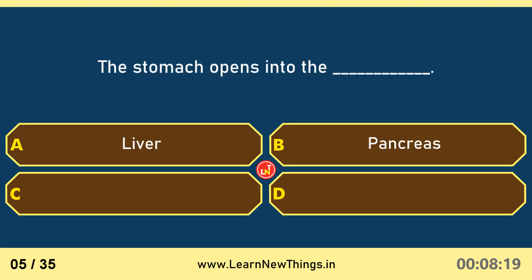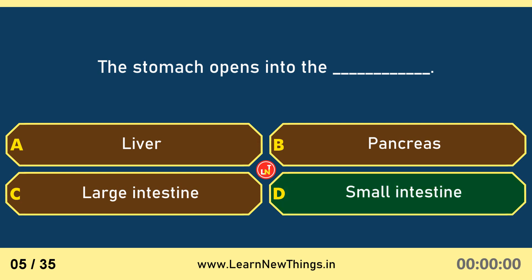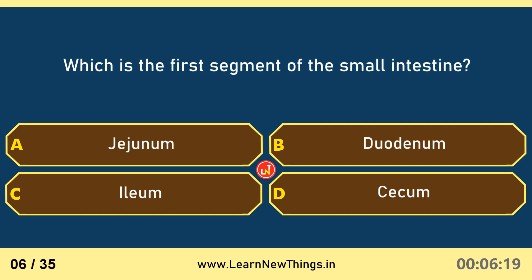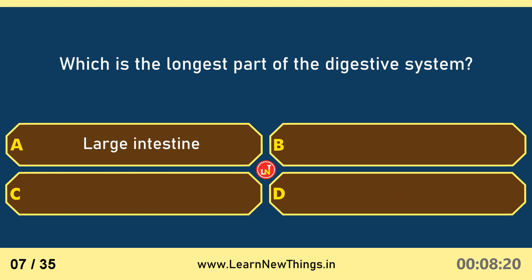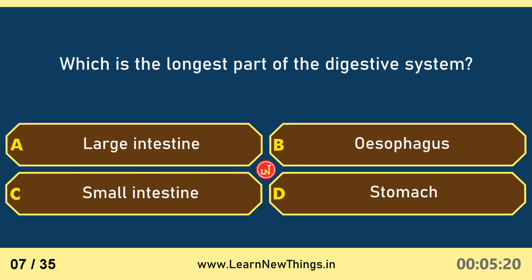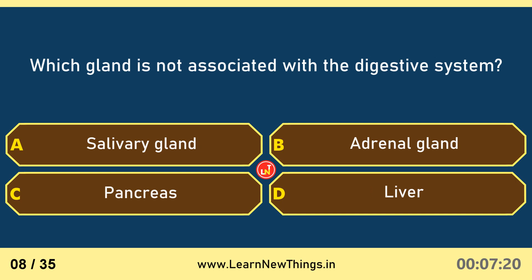The stomach opens into the small intestine. The duodenum is the first segment of the small intestine, and the small intestine is the longest part of the digestive system. Which gland is not associated with the digestive system?